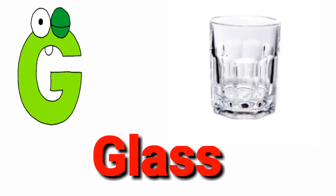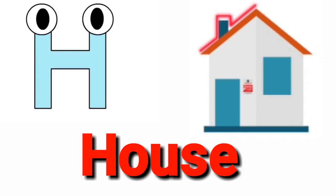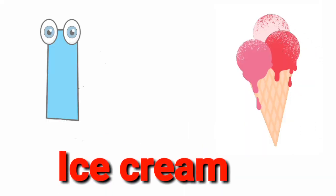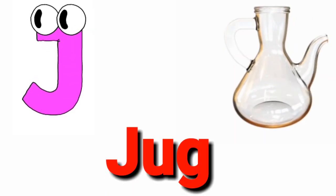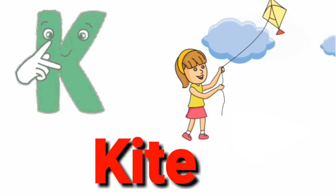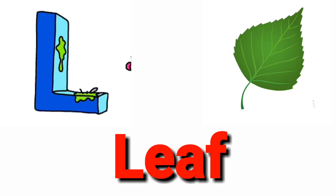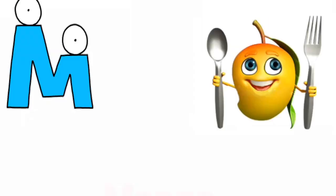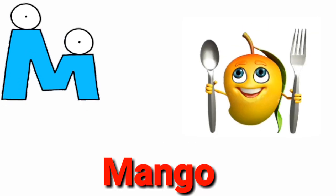G for glass, H for house, I for ice cream, J for dog, K for kite, L for leaf.